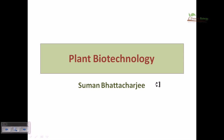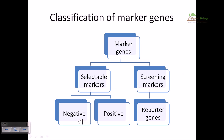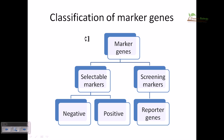After that we'll talk about the natural agrobacteria-mediated gene transfer in plants, and then the synthetic method of gene transfer in plant cells. Now, classification of marker genes: what are marker genes and what are other types of genes? Marker genes are those kinds of genes which mark the presence of a particular gene sequence inside the genome. For example, suppose we have our gene of interest and we need its expression in a host organism — we must attach marker genes to that gene of desire.